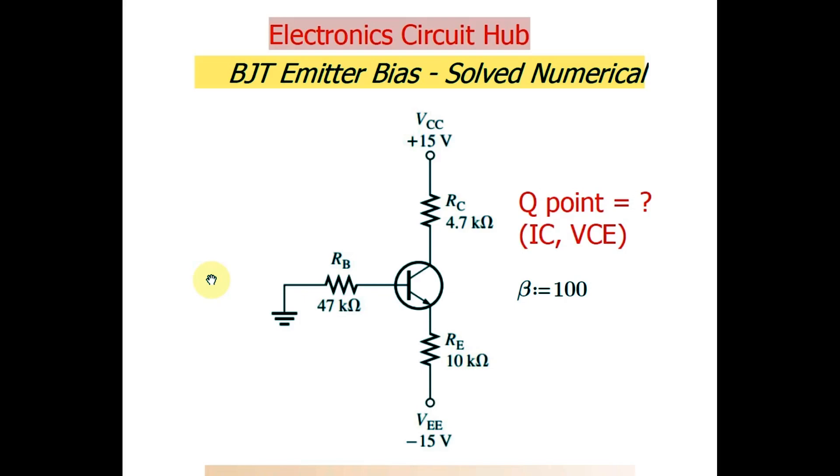This is the circuit diagram of emitter bias configuration BJT. You can see here we have used dual supply rail, plus 15 volt and minus 15 volt.